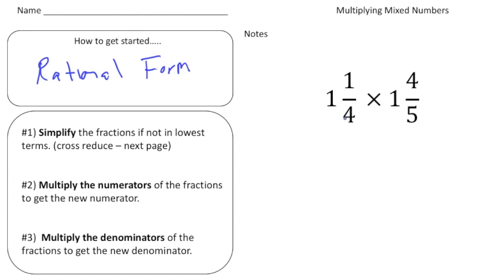Alright, so step number one, I'm going to convert 1 and 1 fourth into an improper fraction. That's 5 fourths. And that's going to be times, and then 1 and 4 fifths as an improper fraction is going to be 9 fifths.